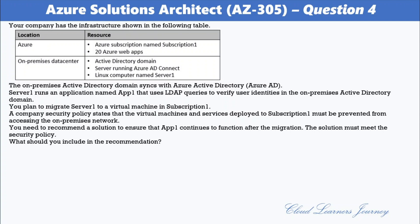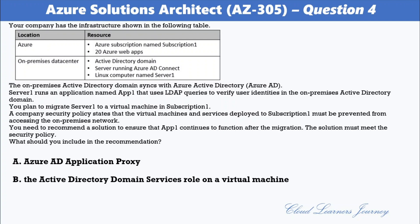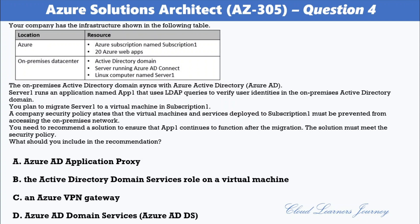The options are: A) Azure AD Application Proxy; B) Azure Active Directory Domain Services role on a virtual machine; C) an Azure VPN Gateway; D) Azure AD Domain Services. The correct option is D — Azure AD Domain Services. Azure AD Domain Services provides managed domain services such as domain join, group policy, LDAP, and Kerberos/NTLM authentication.